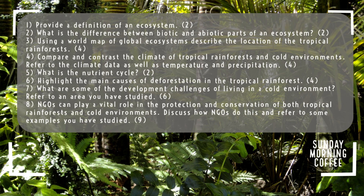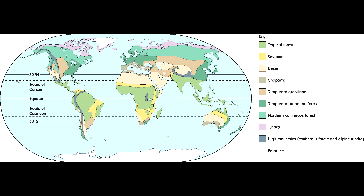An important way to prepare for exams is doing lots of practice questions, as this gets you to think about the application of your knowledge. Here are eight practice questions you can do in your own time — take a screenshot and complete them on paper. Question three asks you to use the world map of the global ecosystems, so take a screenshot of the map provided or find one online. The most effective revision technique is going away and applying your knowledge to practice questions — the more time you invest, the more effective it will be.